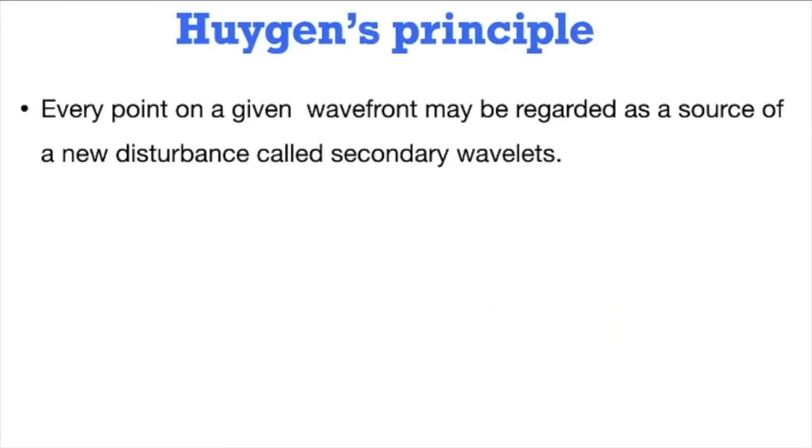Huygens principle states that every point on a given wavefront may be regarded as a source of a new disturbance called secondary wavelets.